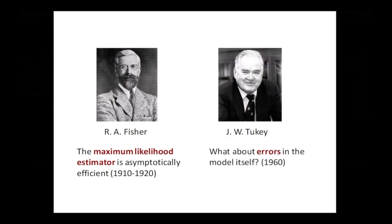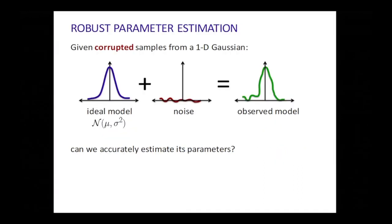This talk is really about a different breed of question, one which could have been asked a lot earlier but really started with the work of John Tukey and others. He asked: the maximum likelihood estimator is the best you can do when you're really given samples from an actual Gaussian or something else in your parametric family — but what happens if there are errors in the model itself, because no model is perfect? What types of estimators behave well in some kind of neighborhood around the true model?